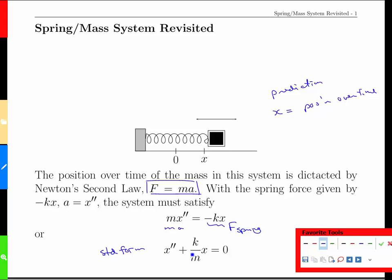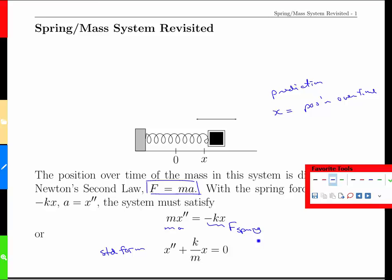As soon as you put it in standard form you see all sorts of nice features. This is a linear constant coefficient, it's second order and it has a zero on the right hand side so it's also homogeneous.